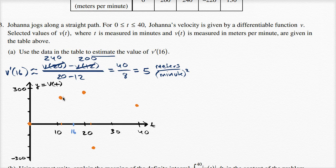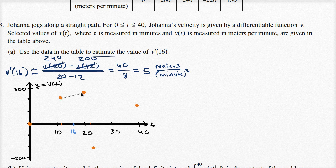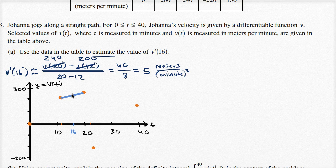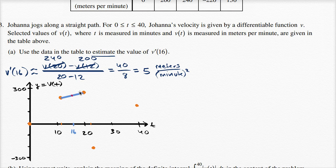We can approximate what the function might do by roughly drawing a line here. So if you draw a line there, and you say, all right, v prime of 16, so v prime of 16 is going to be approximately the slope, is going to be approximately the slope of this line. That's going to be our best job, based on the data that they've given us, of estimating the value of v prime of 16.